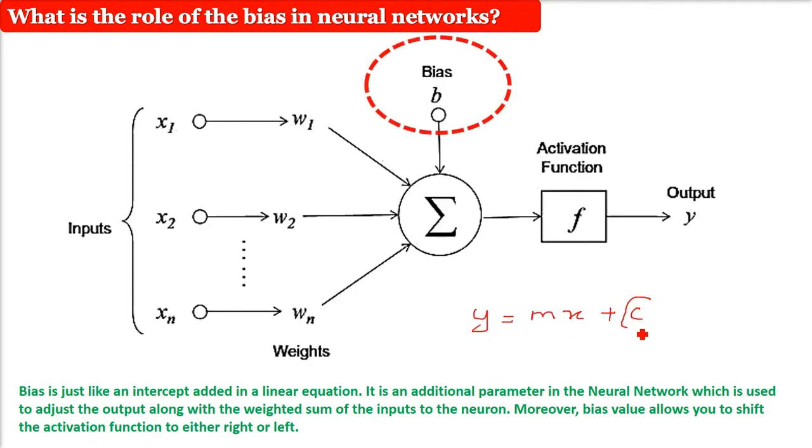This c we are calling as an analogy to our bias. This is the additional parameter in the neural network which is used to adjust the output along with the weighted sum of the inputs to the neuron. The bias value can shift the activation function to right or left.